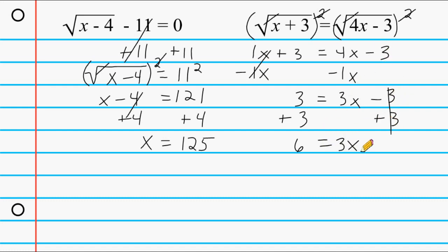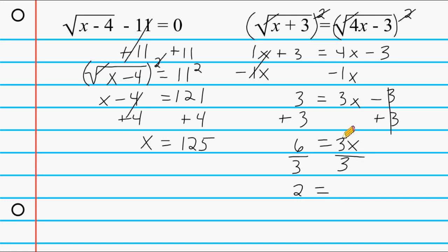Now I'm going to take this coefficient of 3 and, because it's being multiplied with x, I'm going to divide both sides by 3. That turns into positive 1 on the right, and 6 divided by 3 is 2 on the left. These 3's cancel out leaving us with positive 1x, so 2 equals x, or we can say x is equal to 2.